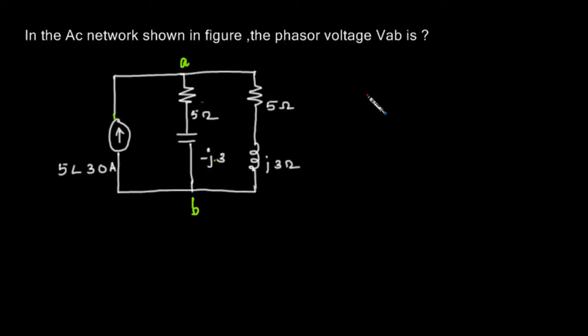Now we are given an AC network. We are asked to find out what is the voltage VAB. Now how can we solve this question?